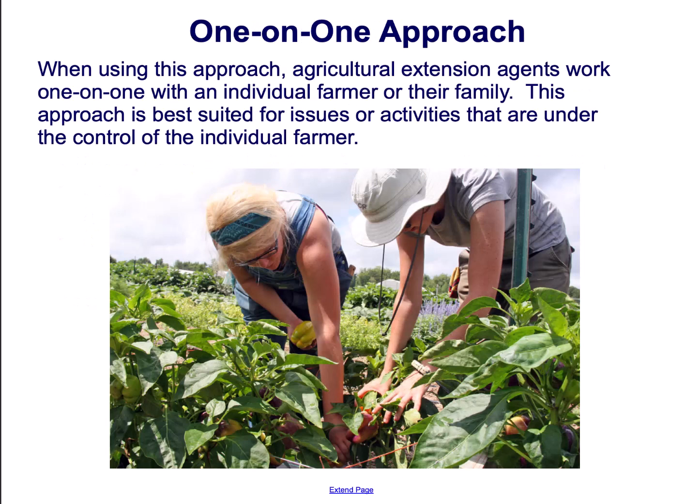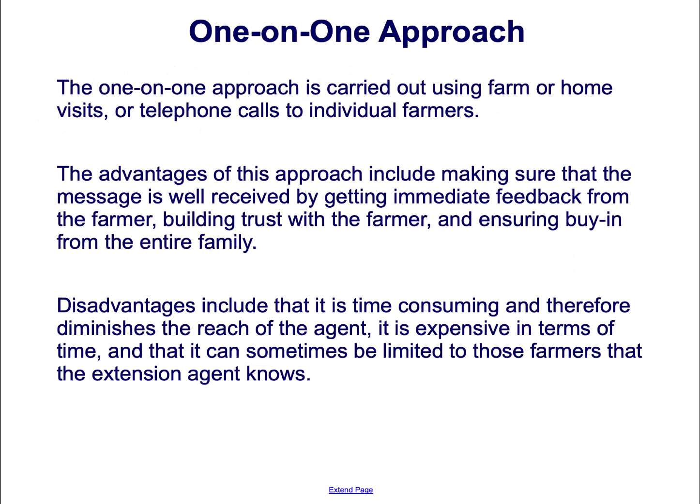The one-on-one approach. Agricultural Extension Agents work one-on-one with an individual farmer or their family. This approach is best suited for issues or activities that are under the control of the individual farmer. The one-on-one approach is carried out using farm or home visits or telephone calls to individual farmers.